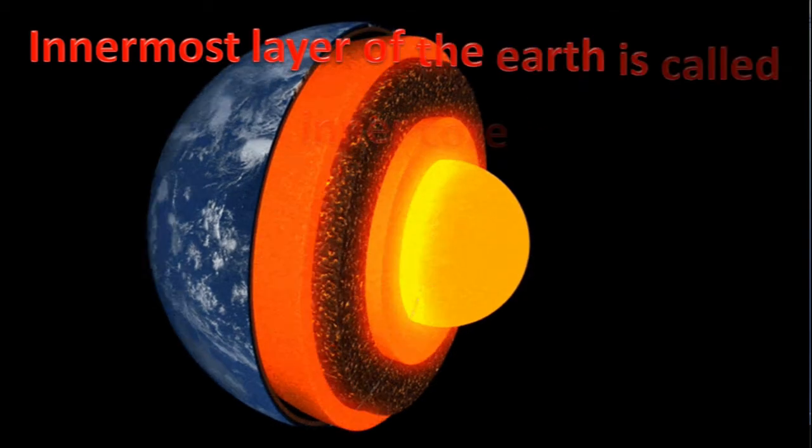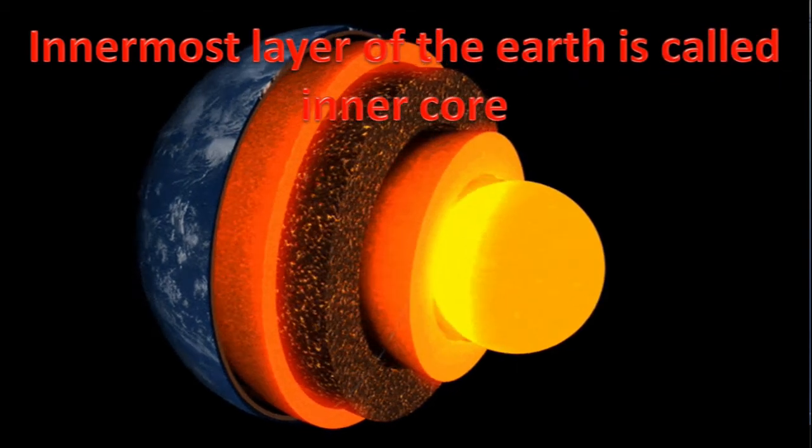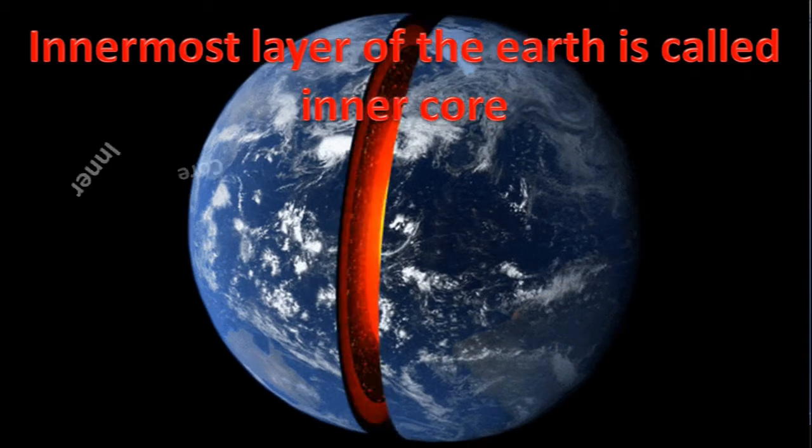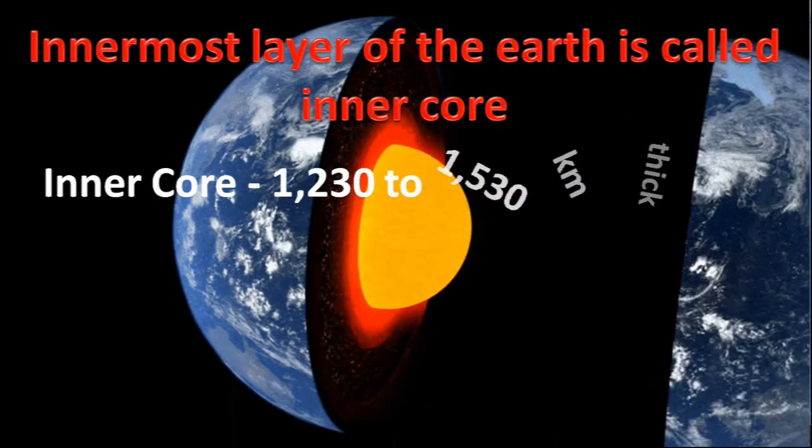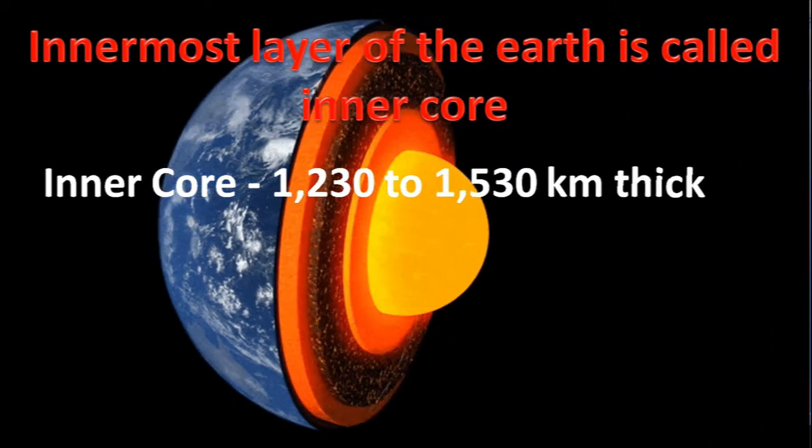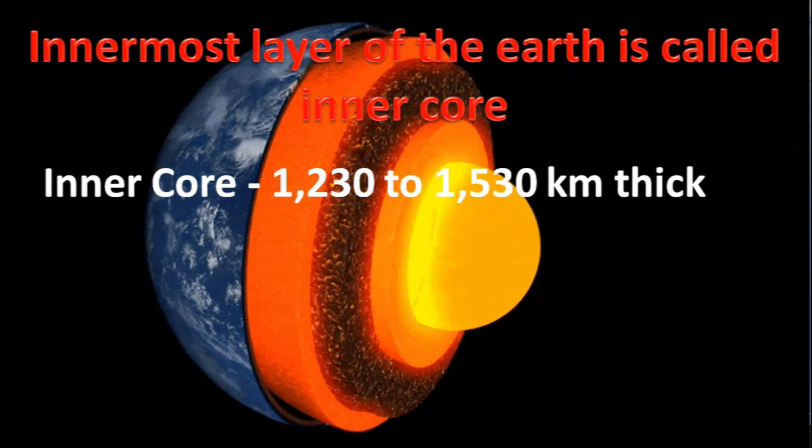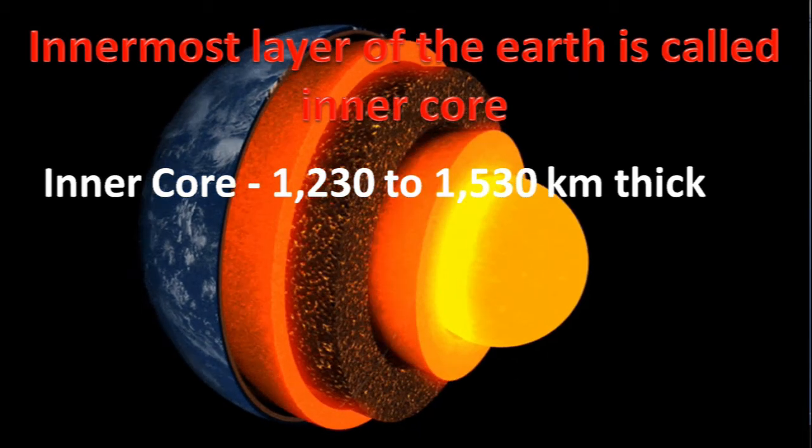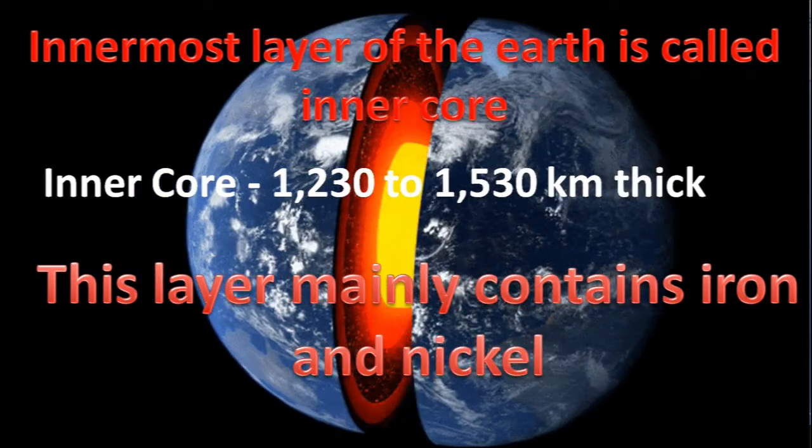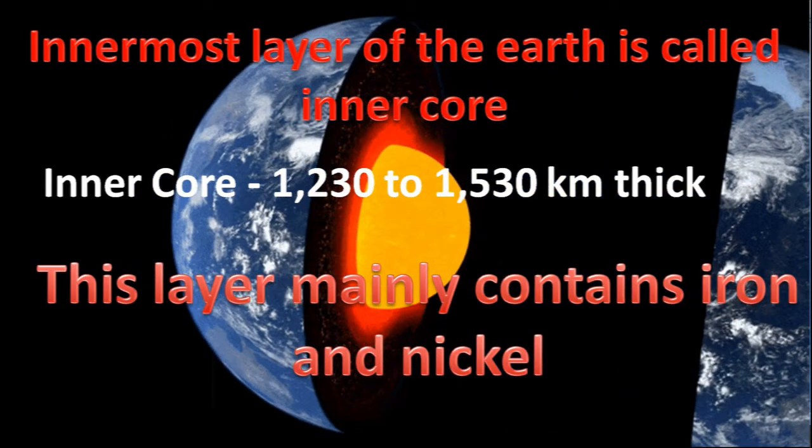Innermost layer of the earth is called inner core. Inner core is about 1,230 to 1,530 km thick. This layer mainly contains iron and nickel.